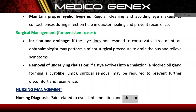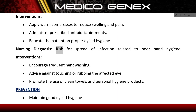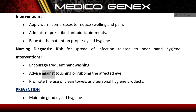Nursing management addresses two key diagnoses. For pain related to eyelid inflammation and infection, interventions include applying warm compresses to reduce swelling and pain, administering prescribed antibiotic ointments, and educating the patient on proper eyelid hygiene. For risk of spread of infection related to poor hand hygiene, interventions include encouraging frequent hand washing and advising against touching or rubbing the affected eye.